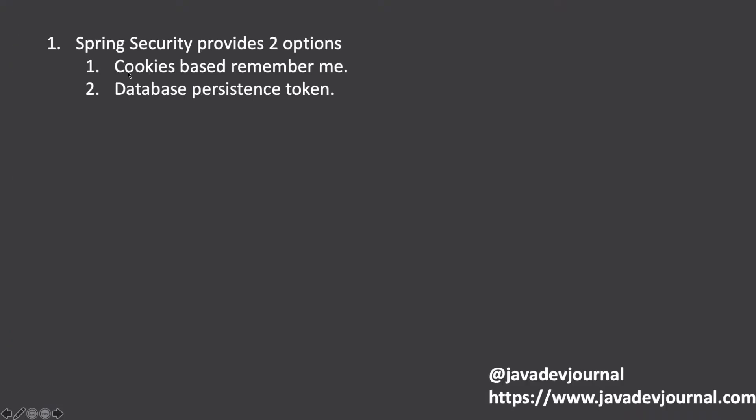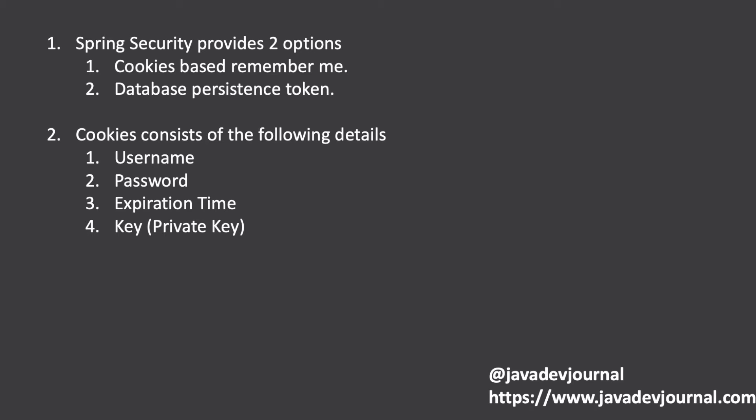In terms of Spring Security, there are two different kinds of approaches or supports provided. One is cookie-based — this specific lesson is focused on the cookie-based Remember Me service. Then there is database persistent login tokens. The difference is that cookies are generated in memory on the fly and stored in your browser, whereas with database persistent tokens, they are generated, stored in the database, and then the cookie is stored in your browser.